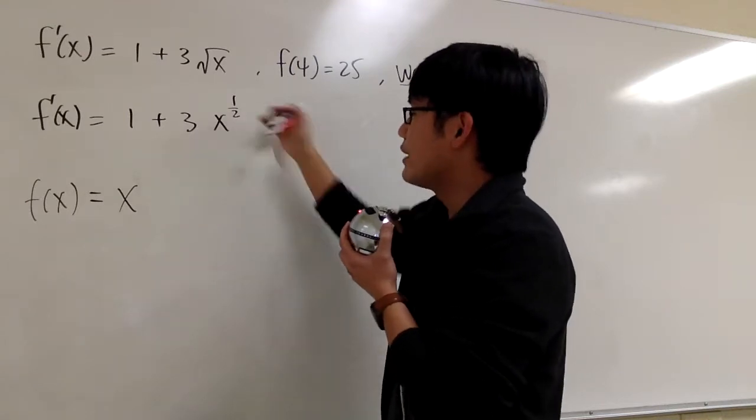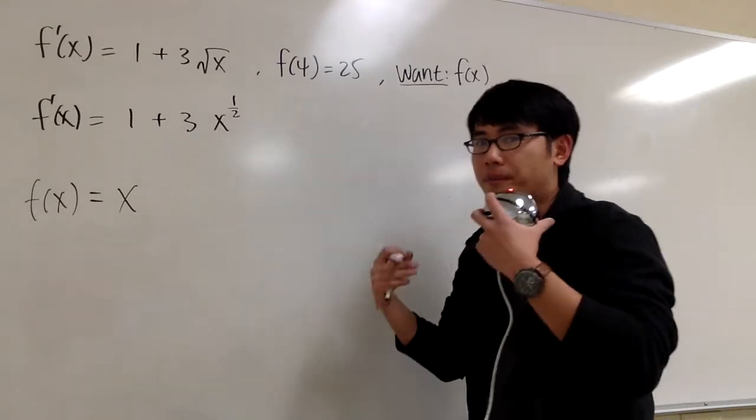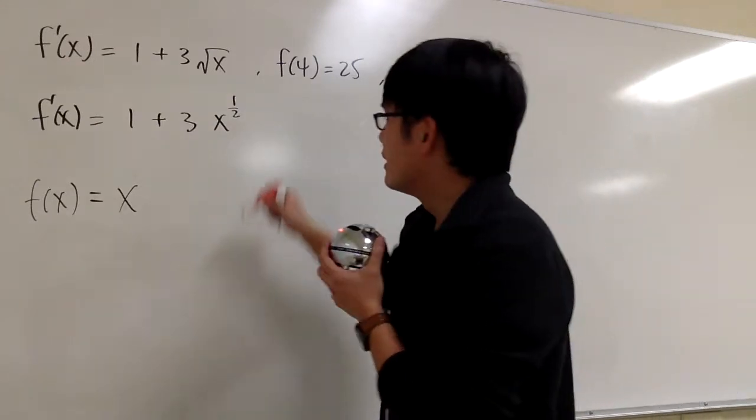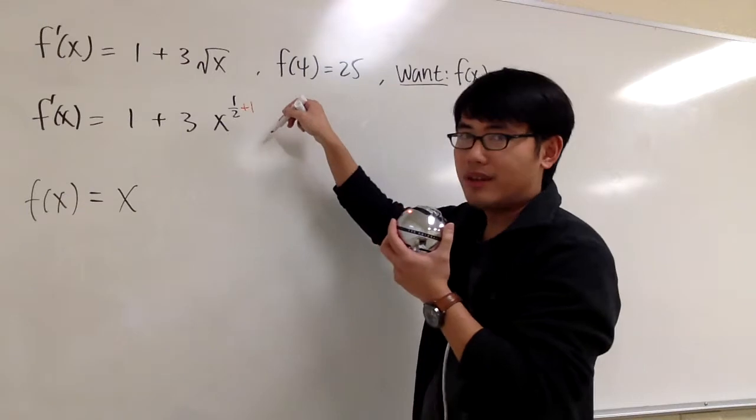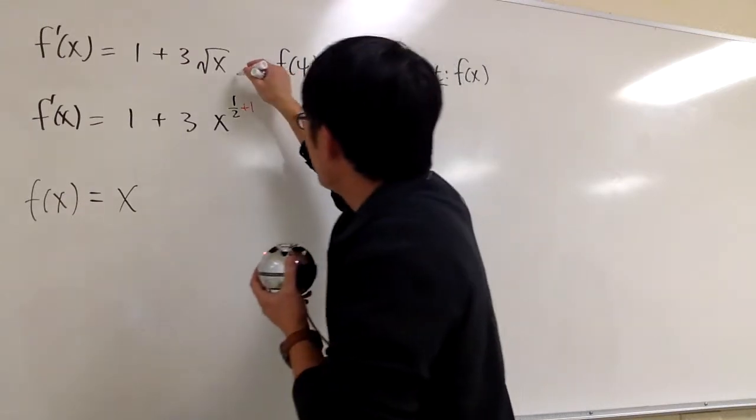3 times x to the 1/2, we can use the backwards derivative for the power rule. What we'll do is we add 1 to the exponent first. 1/2 plus 1 is 3/2. Let me write that down on the top.